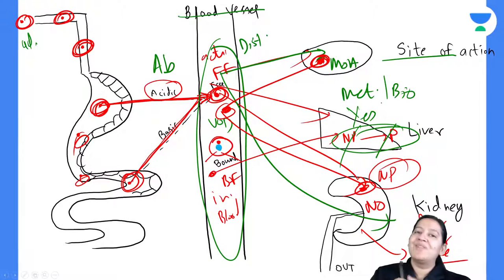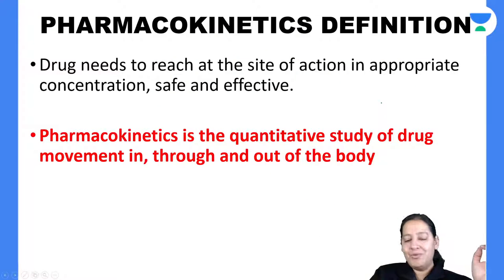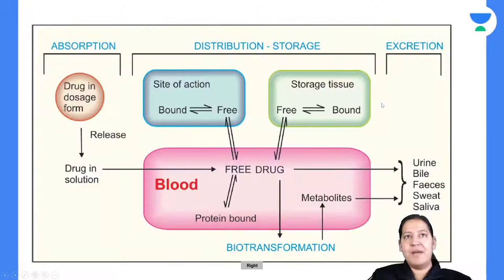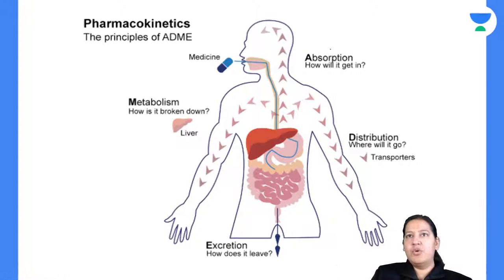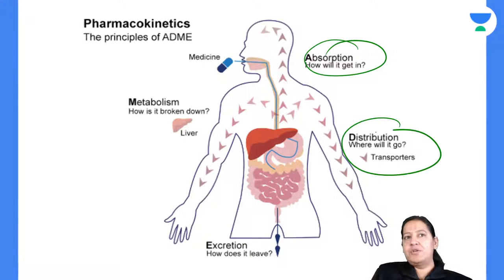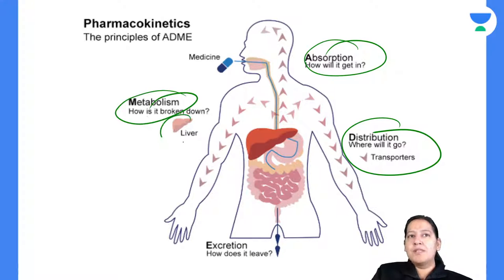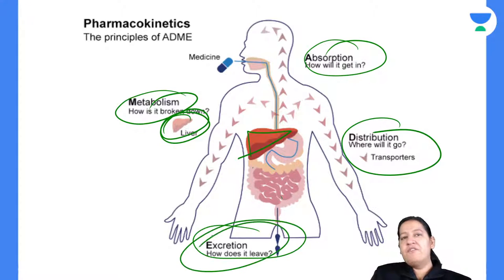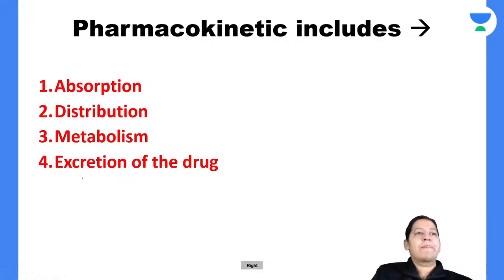Biotransformation is required only for lipophilic drugs. Hydrophilic drugs do not require biotransformation because they are already polar. If the drug is already polar, it can directly go for excretion after distribution. If the drug is non-polar, then before excretion there must be metabolism. Free drug enters the hepatocytes (liver cells), and enzymes present inside — in mitochondria and cytoplasm — convert the drug from non-polar to polar.